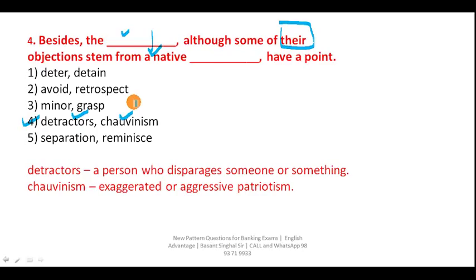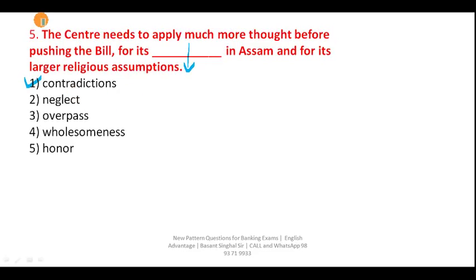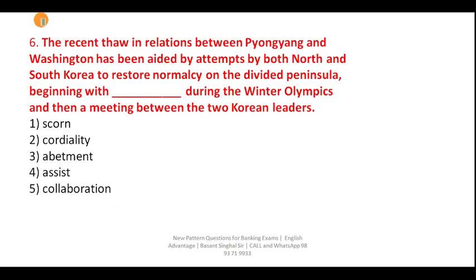Question five: 'The center needs to apply much more thought before pushing the bill for its ___.' The center needs more thought because it is creating some kind of problem and may be sensitive. You need a word equivalent to problem, protest, or opposition — and that word is contradiction. So your correct answer is contradiction.